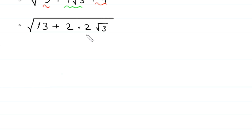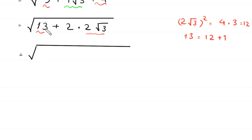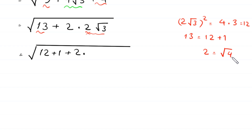Now, if you take the square of 2 times square root of 3, it will be 4 times 3, which equals 12. So we write this 13 as 12 plus 1. Then this expression becomes square root of 12 plus 1 plus 2 times — this 2 can be written as square root of 4 — so we write this 2 as square root of 4 times square root of 3.